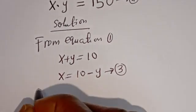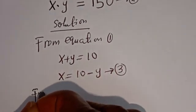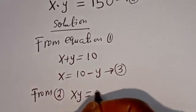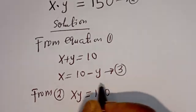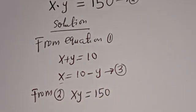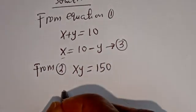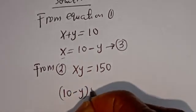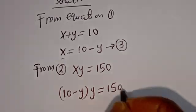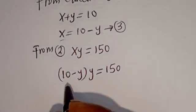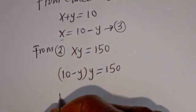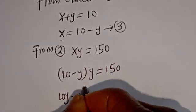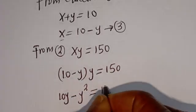Also, from equation 2, SY is equal to 150. We can substitute for S there. So (10 minus Y) times Y is equal to 150. This gives us 10Y minus Y squared is equal to 150.